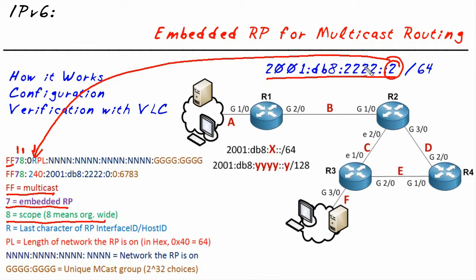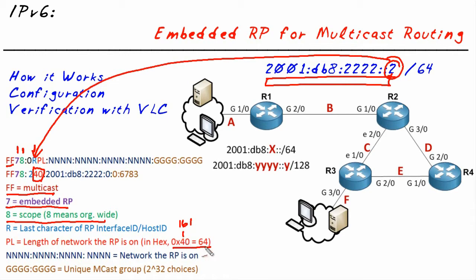We also need to know what network it's on. These next two characters, which represent eight more bits, is the prefix length. With those two characters, we're going to indicate how much of the network we're going to tell about. So if the rendezvous point is on a slash 64-bit network — 2001:DB8:222:2::0 — those 64 bits need to be represented here. The value 40 in hexadecimal represents 64 in decimal: 16 times 4 plus 0, which equals 64. So 0x40 inside the multicast group is telling you that you're about to receive 64 bits of information regarding the network address of the rendezvous point.